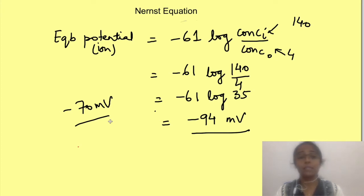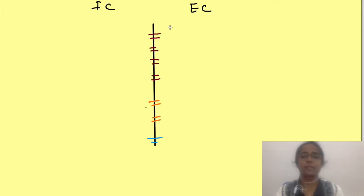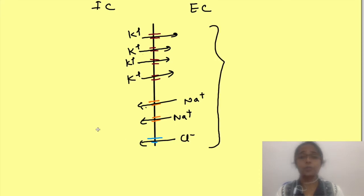Well a cell does not behave exactly like what we discussed till now. Instead there are many ions involved simultaneously. So at rest, membrane is more permeable to potassium but it is also permeable to sodium, chloride but much lesser than potassium. So that means all these ions contribute to RMP. So now how to determine RMP with Nernst equation?